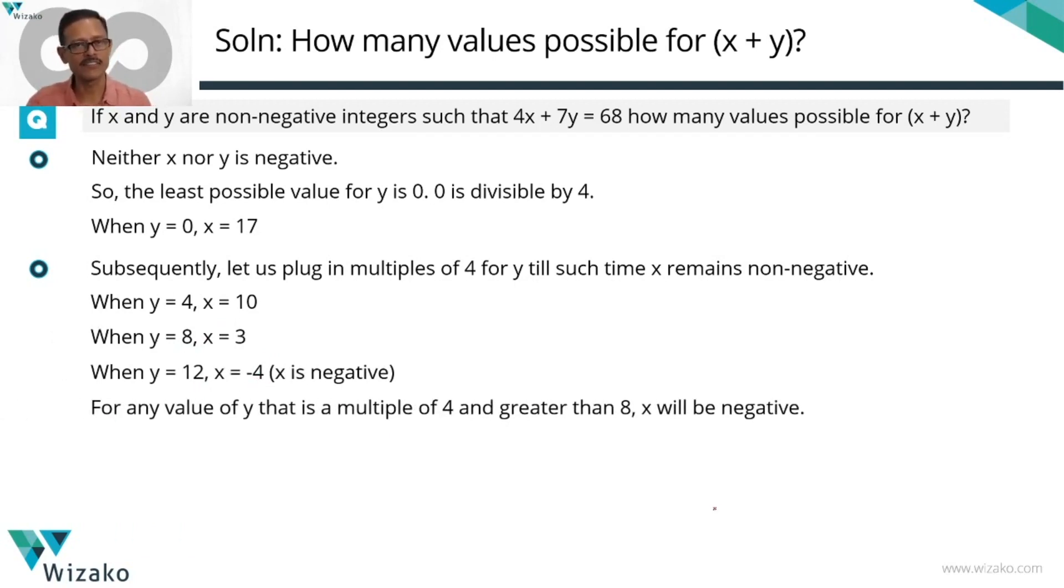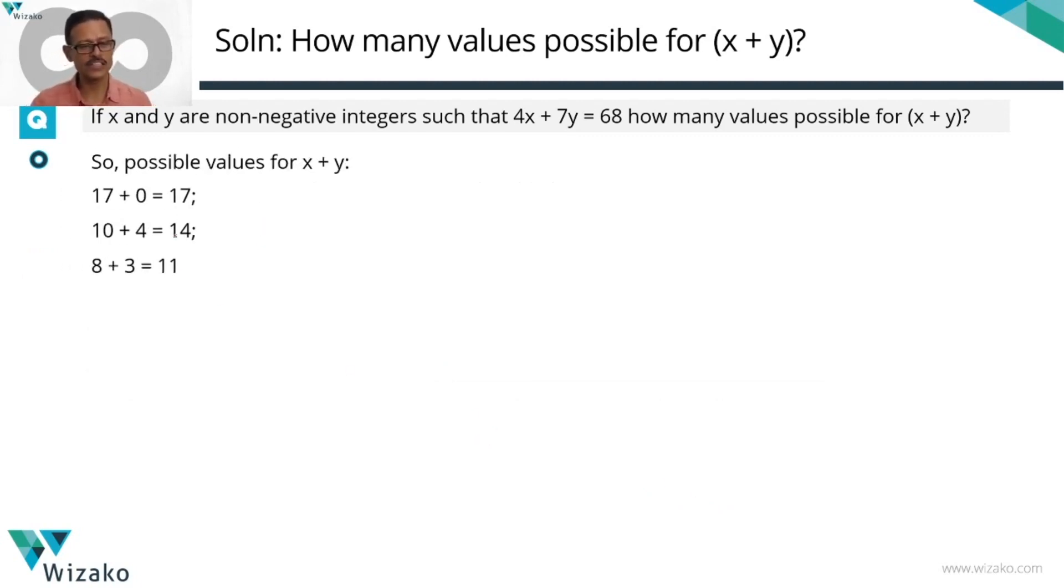So we don't need to go anything beyond this. So these are the three sets of values. We computed the values of x plus y in each of those cases. All of those are distinct values. So how many different values can x plus y take? x plus y can take three different values. So choice B is the answer to this question.